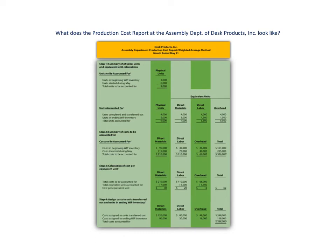What does the production cost report look like? We have the production cost report for one department — it is the assembly department. I know it's fine print here; I'll expand it in just a minute so you can see the details. But this is for the assembly department and it's for the month ended May 31.